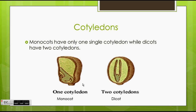This is where their name comes from — mono being one and cot being the abbreviation for cotyledon. The same goes for dicot, as di being two and cot being the abbreviation of cotyledon.